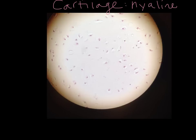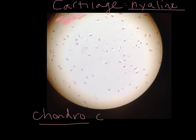Hyaline cartilage is glassy in appearance — hyaline means glass — and to me it looks like a washed-out watercolor. You see lots of space, lots of matrix or ground substance, kind of washed out. That's actually where you find collagen fibers; they're just really difficult to see through a light microscope. The resident cells of cartilage are chondrocytes — chondro and cytes. The cell that actually begins to form the matrix is a chondroblast. We usually use the word blast for an immature cell and cyte for a mature cell.